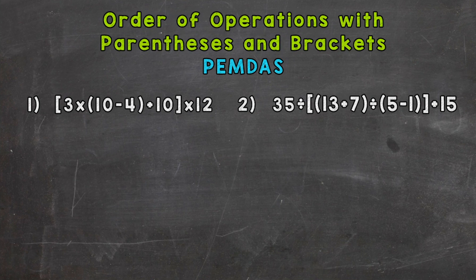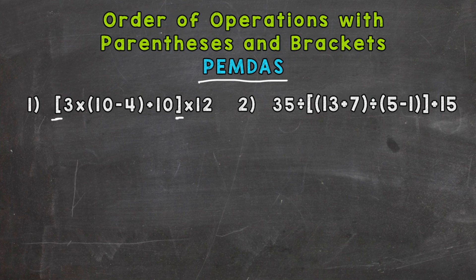Just like any order of operations problem, we're going to use the PEMDAS steps: parentheses, exponents, multiplication and division, and then addition and subtraction. Whenever you see brackets, they hold the same value as parentheses — they are priority number one. So this problem has a set of brackets, and the first thing we're going to do is solve everything within those brackets. It's almost like a problem within a problem. We have three times (10 minus 4) in parentheses, plus 10.